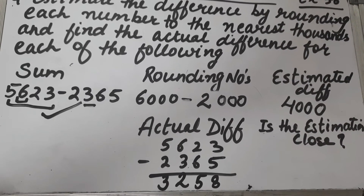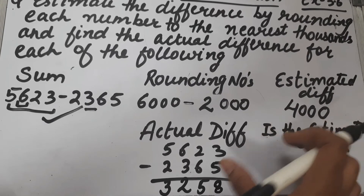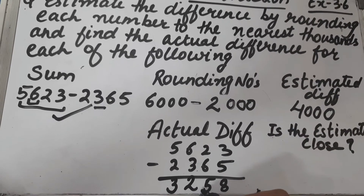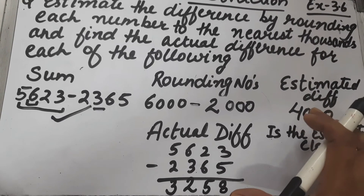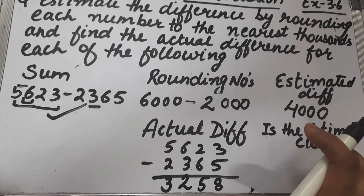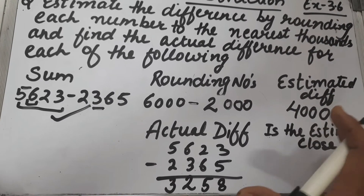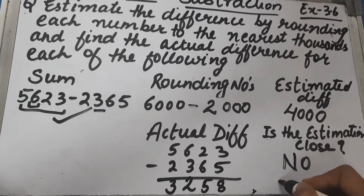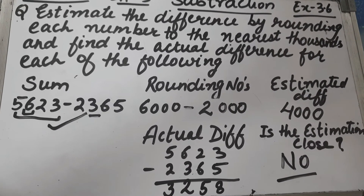Now, is the estimation close? The actual difference is 3,258 and the estimated difference is 4,000. These are not close to each other because there is a difference of more than 700 between them. So they are not close to each other. Now let's start Part B.